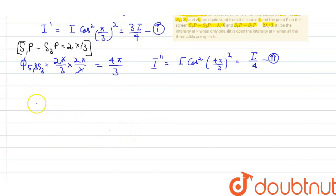Intensity at P. Therefore, i at P when all slits are open can be written as i into i dash into i double dash, which comes out to be 3i.